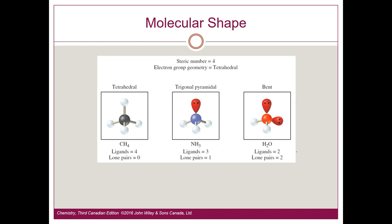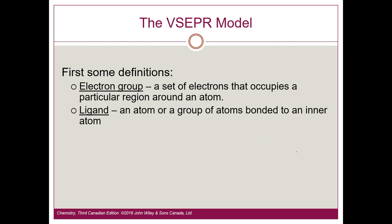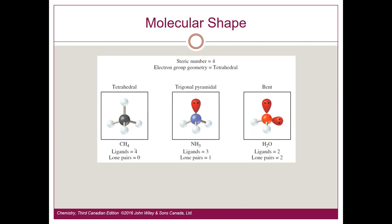Let's look at some definitions for the VSEPR model. An electron group is a set of electrons that occupies a particular region around an atom. A ligand is an atom or group of atoms bonded to an inner atom. Steric number — the book uses this term — is the same as the number of VSEPR groups or electron groups. It's the sum of the number of ligands plus the number of lone pairs, written as S.N.